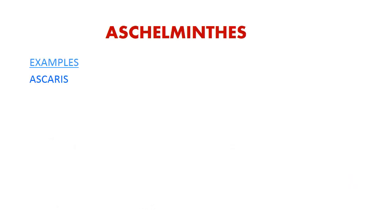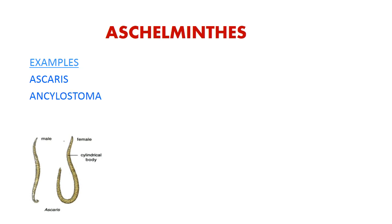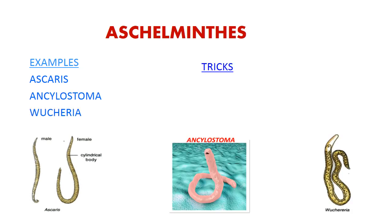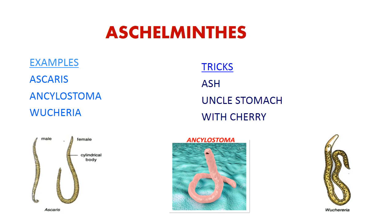The next is Nematoda. The examples are Ascaris, Ancylostoma, and Wuchereria. The trick is 'Ash Uncle Stomach with Cherry': from 'Ash' it's Ascaris, from 'Uncle Stomach' it's Ancylostoma — Uncle and Ankylo are similar, Stomach and Stoma are similar — and from 'with Cherry' it's Wuchereria, similar words. So remember: Ash, Uncle Stomach with Cherry.